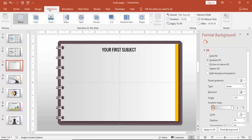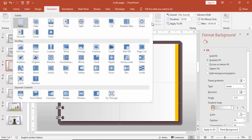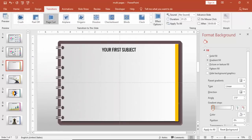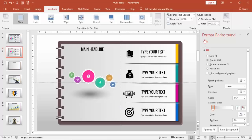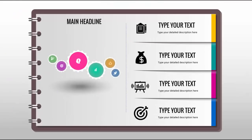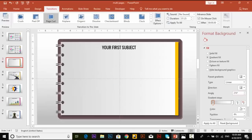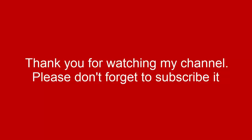Go to Transitions and set a transition effect called Page Curl. This is how it looks. I've used the same transition for the rest of my pages — when I click, it will show you the next page. That's it from me. Thank you for watching my YouTube channel and don't forget to subscribe to PowerPoint University. See you soon with more interesting stuff.